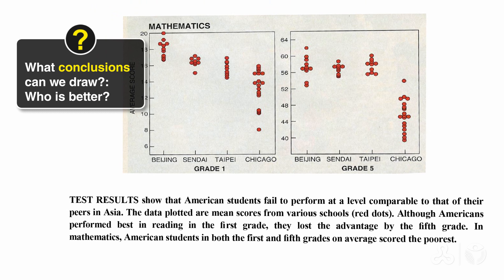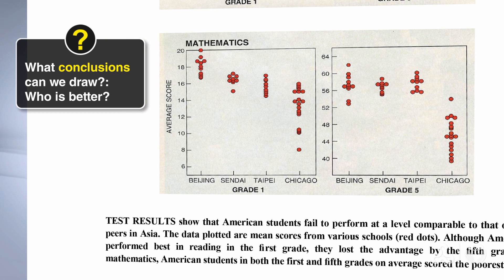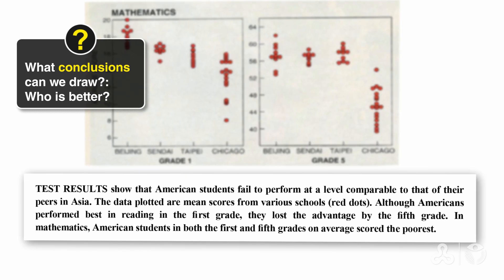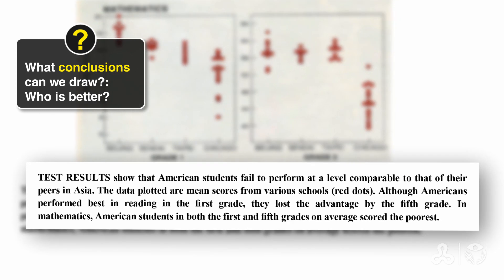Let's look at the mathematics graph. This is easy. Asian schools start off better, and they just get better. The differences become bigger. Let's look at the last sentence in the captions. In mathematics, American students in both the first and the fifth grades on average scored the poorest. And look!